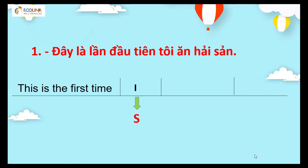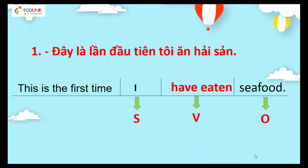I là chủ ngữ, hiện tại hoàn thành ta có 'I have eaten', 'I have eaten seafood'. Đáp án: 'This is the first time I have eaten seafood.' Động từ eat chuyển sang phân từ 2 chỉ là eaten. This is the first time I have eaten seafood.